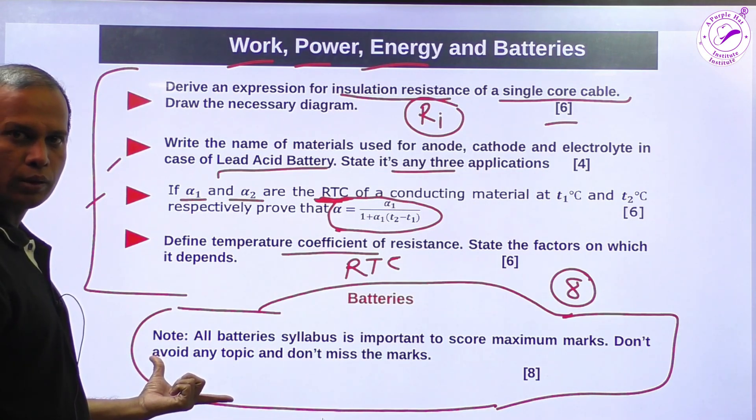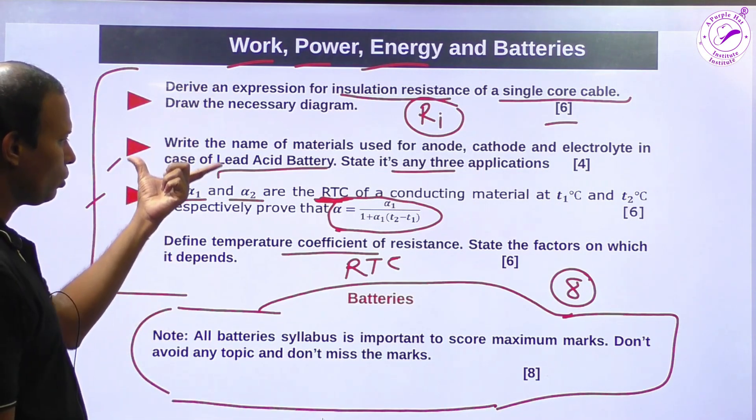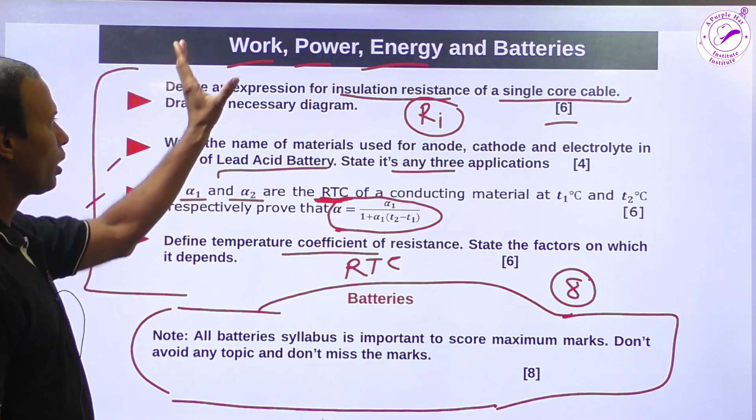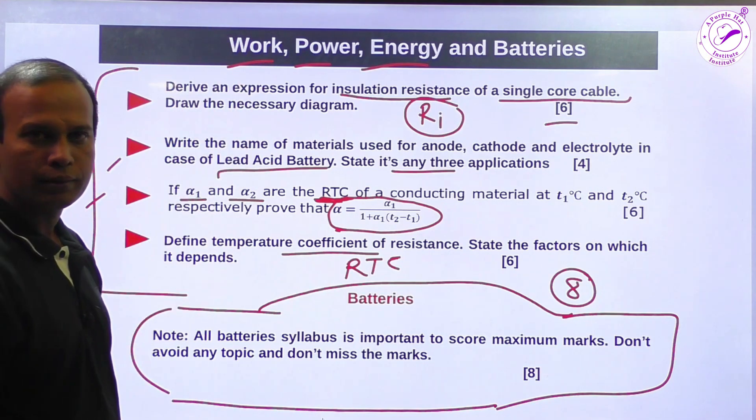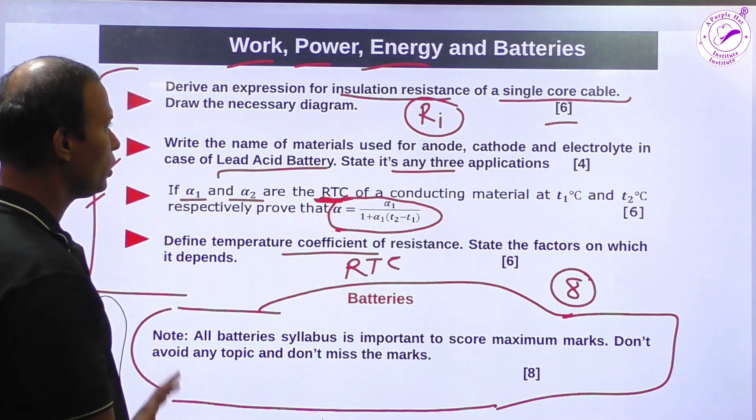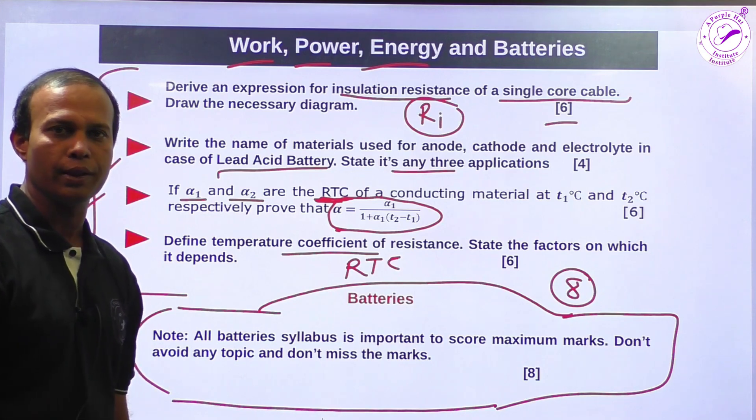Because work, power, energy, I am completely skipping because questions go in OR. So just only for batteries, choose one question regarding batteries, another question through this combination, and work, power, energy you neglect, avoid, because this question will be in OR. So this is the simplest way to score more in basic electrical.